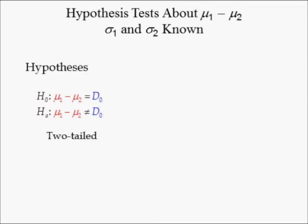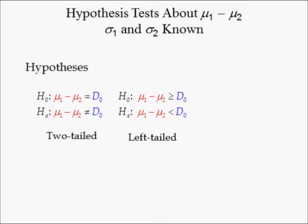For this reason, this is a two-tailed test. In a left or lower-tailed test, the difference in population means is greater than or equal to its hypothesized difference under the null hypothesis. The opposite is the alternative hypothesis, which states the difference in population means is less than its hypothesized difference. Notice that the null hypothesis is associated with the equal sign, and the alternative hypothesis identifies the test as lower or left-tailed.